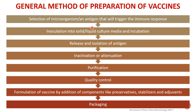After selecting the microorganism, we need to increase its growth. The second step is inoculation of the microorganism into a solid or liquid culture media, followed by incubation in order to increase the number of microorganisms. The next step is the release and isolation of the antigen, followed by inactivation or attenuation — inactivation applies to toxins, and attenuation applies to suspension of microorganisms.